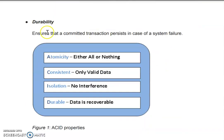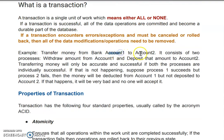Fourth is Durability. Whatever transactions you perform, if a system failure occurs, that data should be recoverable. For example, if you are transferring money from account one to account two and there is a power failure at the server side, account one's previous data — say, a balance of 1,000 — should be recoverable, and the same for account two. The original values must be stored somewhere so they can be retrieved and preserved.